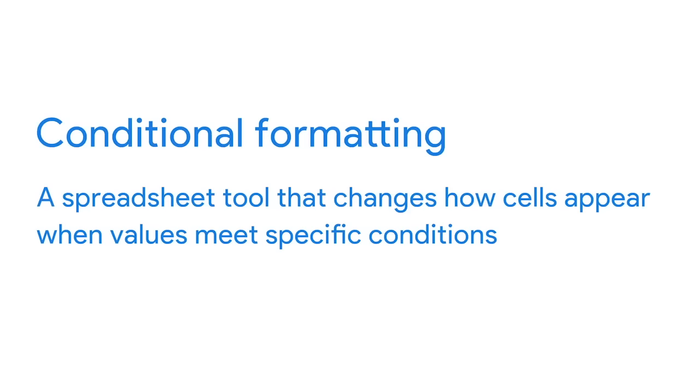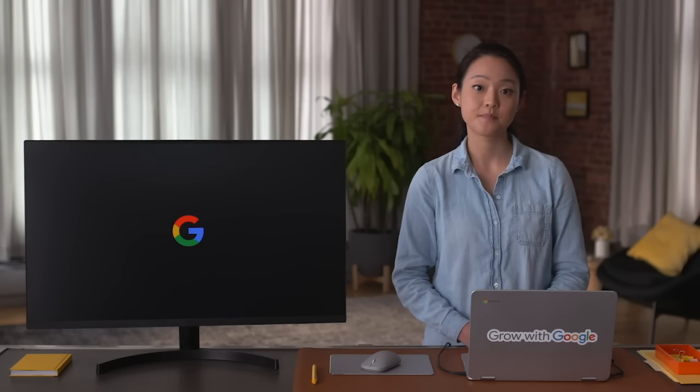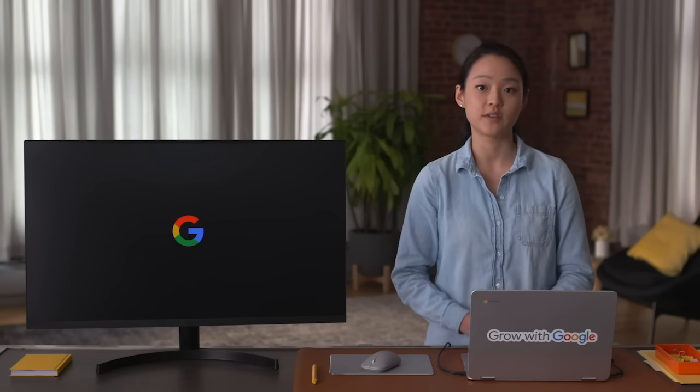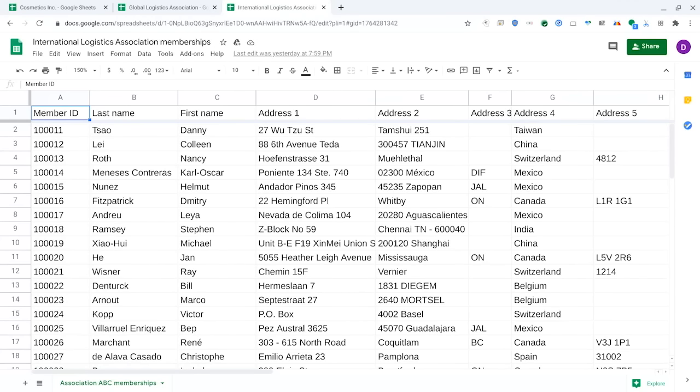The first is conditional formatting. Conditional formatting is a spreadsheet tool that changes how cells appear when values meet specific conditions — it can also let you know when a cell does not meet the conditions you've set. Visual cues like this are very useful for data analysts, especially when working in a large spreadsheet with lots of data. Making certain data points stand out makes the information easier to understand and analyze. Let's use conditional formatting to highlight blank cells in the Logistics Association spreadsheet.